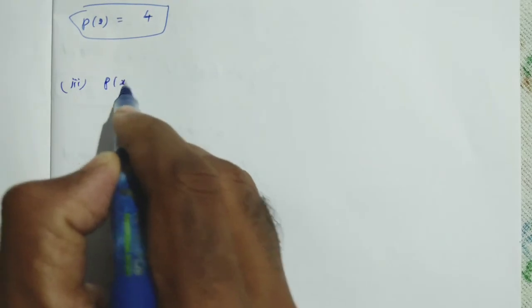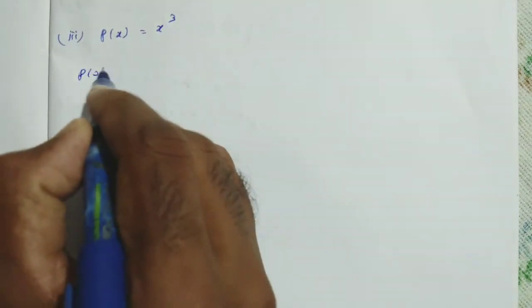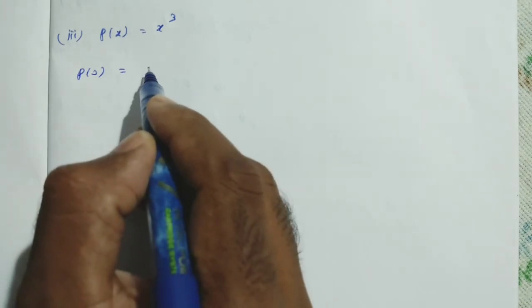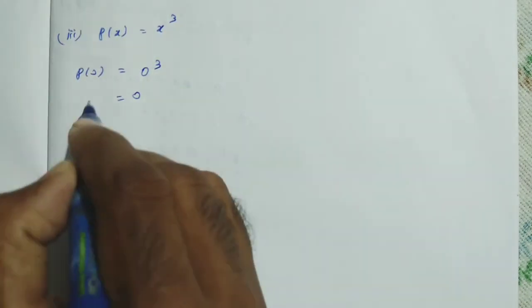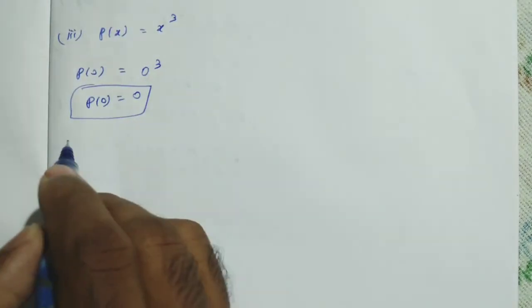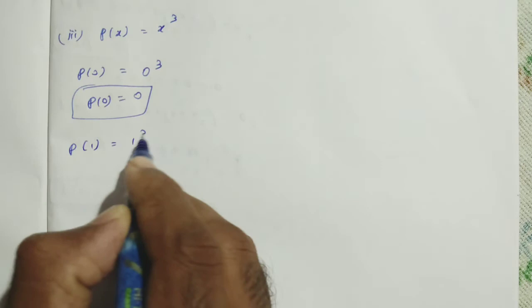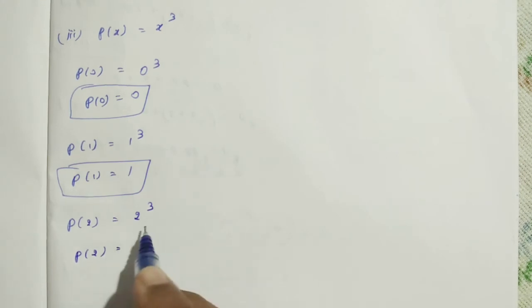Next polynomial, third one: P of x is equal to x cubed. Now we can find P of 0: 0 cubed is 0, so P of 0 equals 0. Next, P of 1: 1 cubed is 1, so P of 1 equals 1. P of 2: 2 cubed — 2 into 2 into 2, that is 8. So P of 2 equals 8.